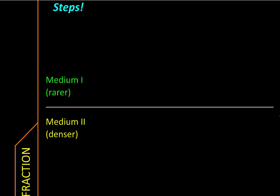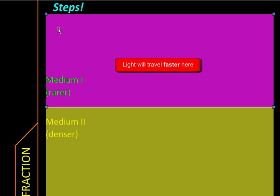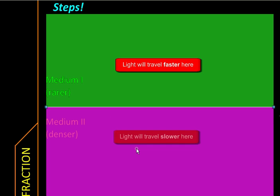On the top we have an optically rarer medium so light will travel faster here, while this is optically denser where it will travel slower.